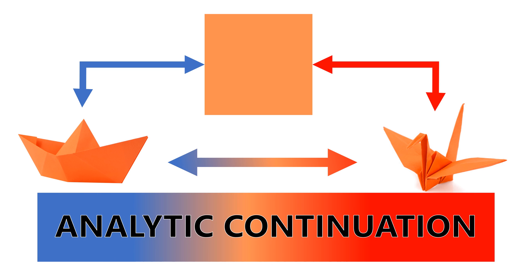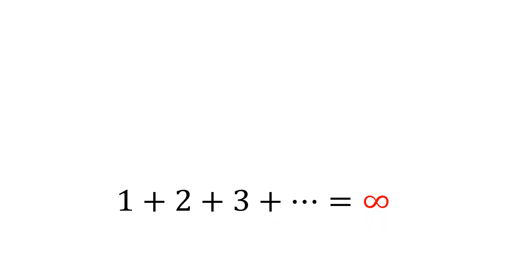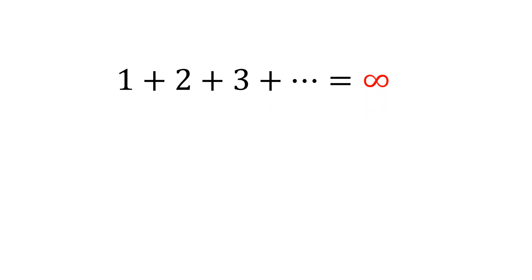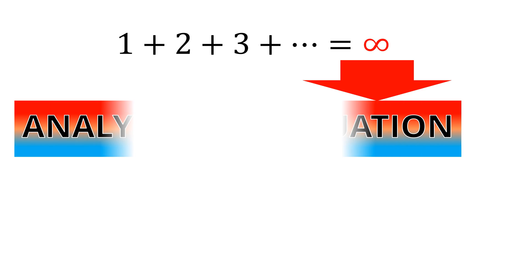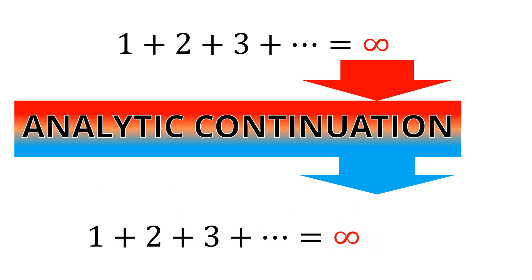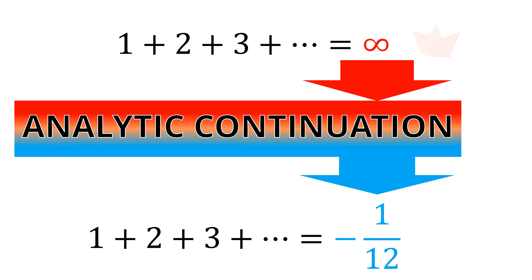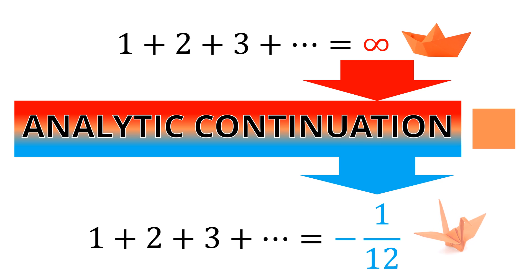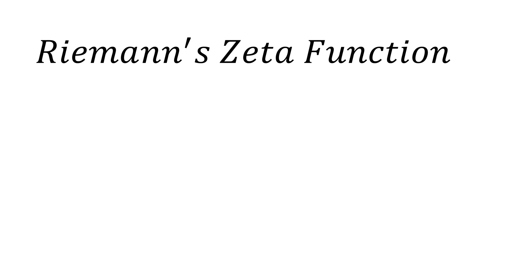In this video we will explore the top achievement of this concept in a super simple way. We can use a very famous sum to explain that: 1 plus 2 plus 3 dot dot dot is equal to infinity. However, analytic continuation allows us to say it's equal to minus 1 over 12. The change from infinity to minus 1 over 12 is like the change from a boat to a bird in origami.